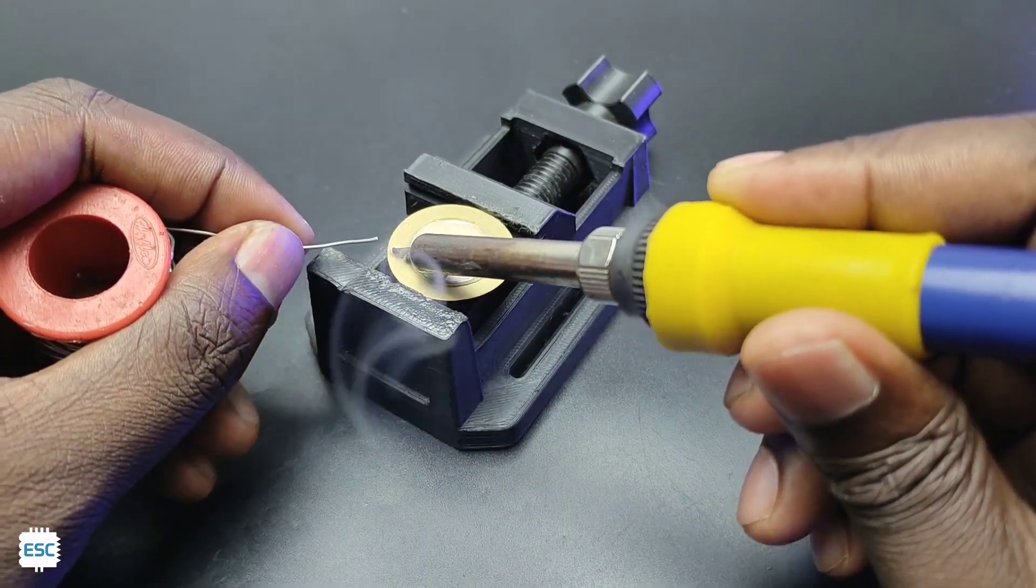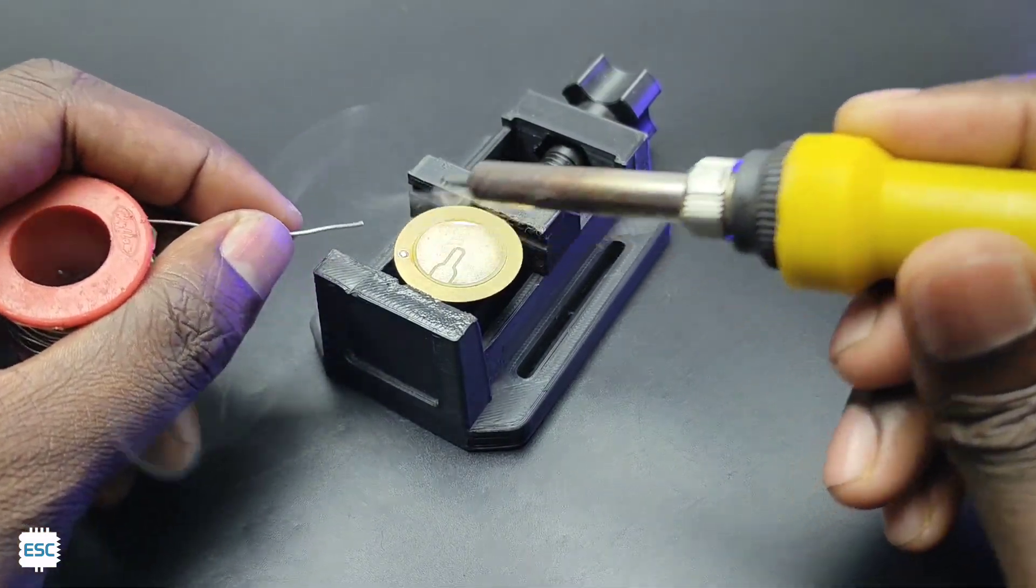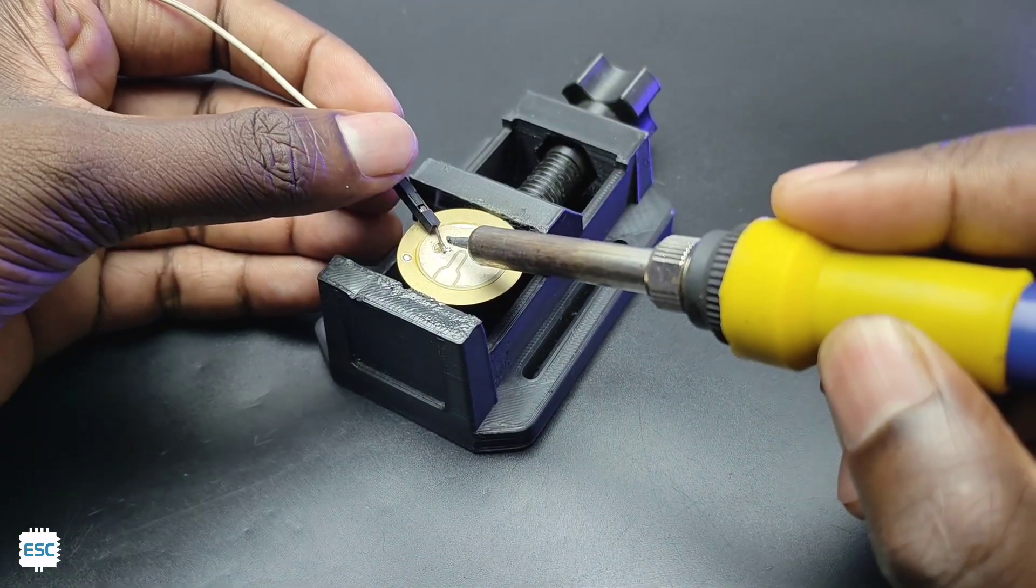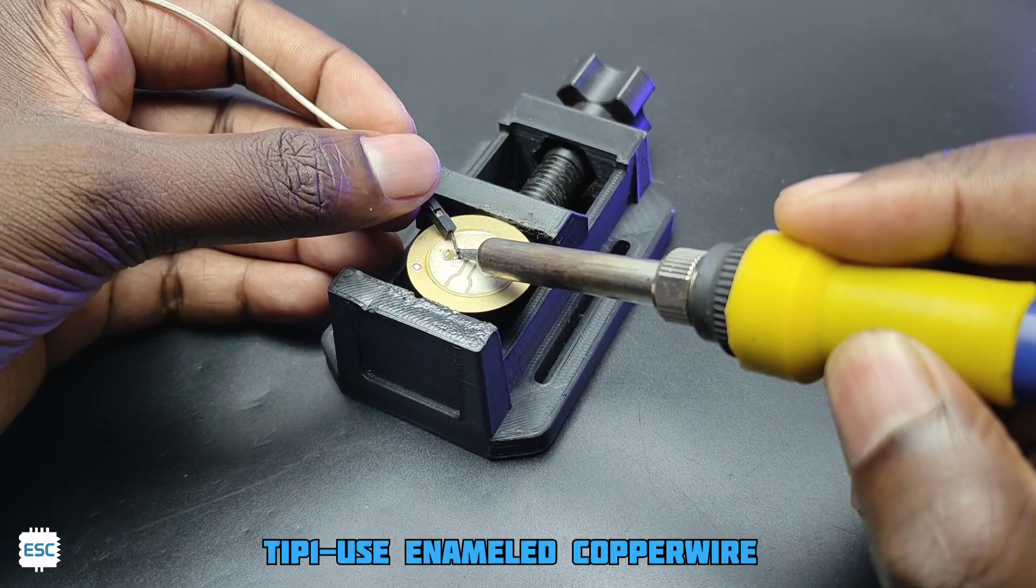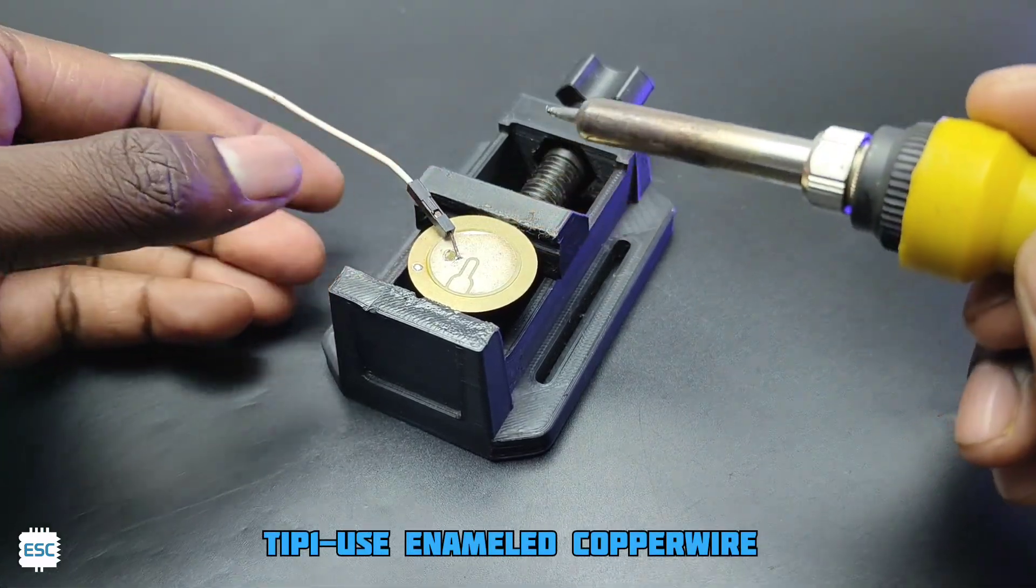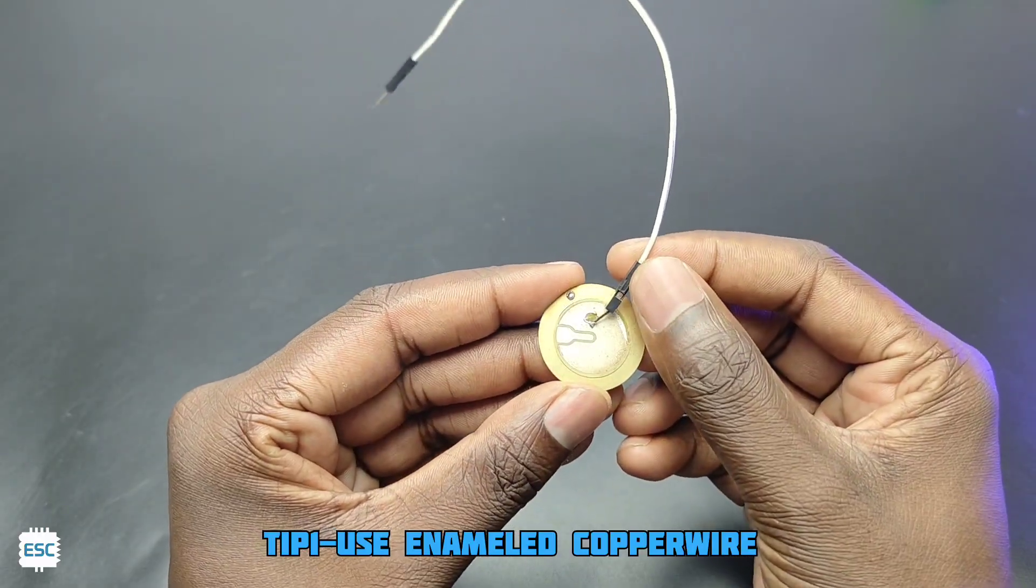To get output, let's solder wires to the disc. Here is the first tip: if you use jumper wires or thick wires, it will damage the disc like this.